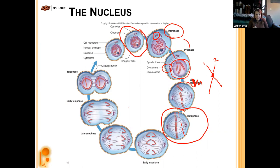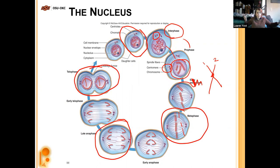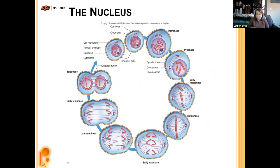In anaphase, the chromosomes are pulled apart — one copy goes to one side, the other copy to the other side. In telophase, we remake the nuclear membrane around each set of chromosomes, and everything gets ready to pinch off in the middle — the cleavage furrow forms and the cell pinches in, creating two separate daughter cells.